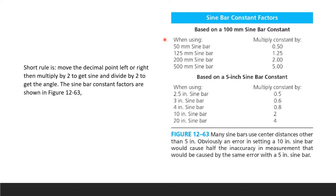The sine bar constant factors are shown based on a 100 millimeter and 5-inch sine bar constant. For a 50 mm sine bar, multiply by 0.50; 125 mm by 1.25; 200 mm by 2; 500 mm by 5. For a 5-inch bar multiply by a given constant, for a 2.5-inch bar by 0.5, and for a 10-inch bar by 2. Many sine bars use center distances other than 5 inches, so an error with a 10-inch sine bar causes half the inaccuracy that the same error would cause with a 5-inch sine bar.